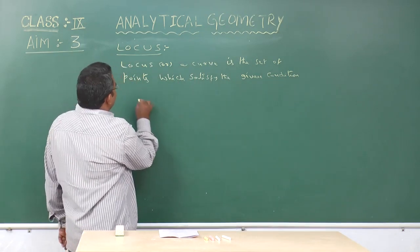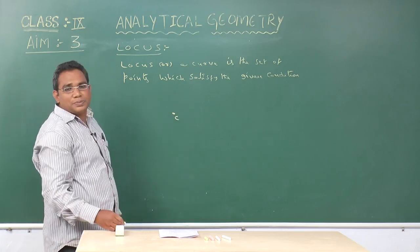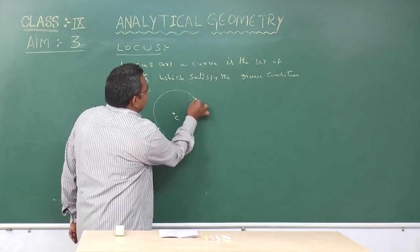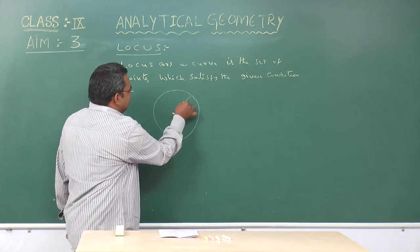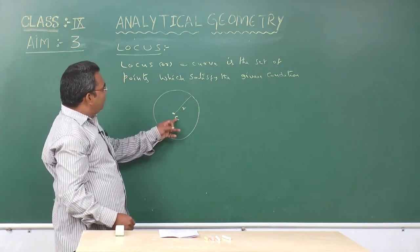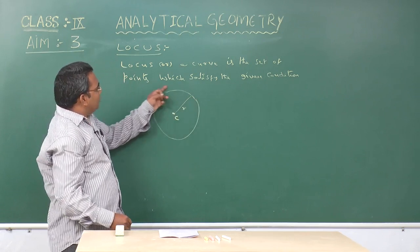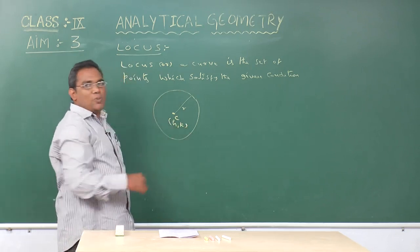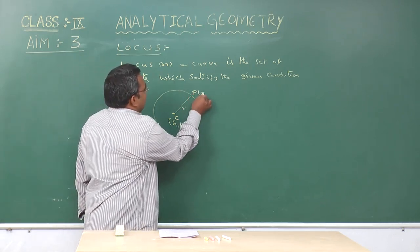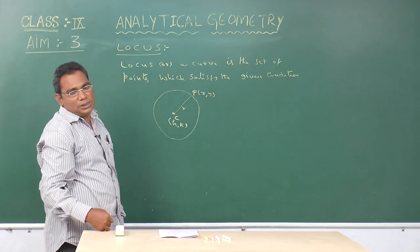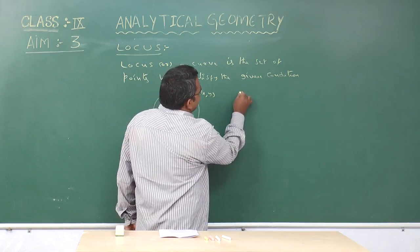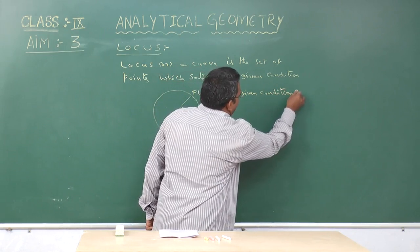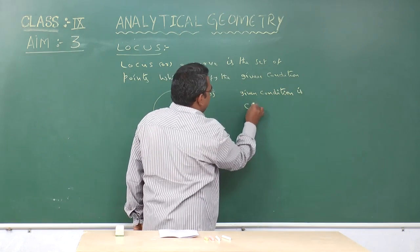Suppose, let C be a fixed point. The set of points in the plane which are at a constant distance r from the fixed point C — then the locus represents a circle. Let C(H, K) be a fixed point and P(X, Y) be any point in the locus. The given condition is CP equals r.